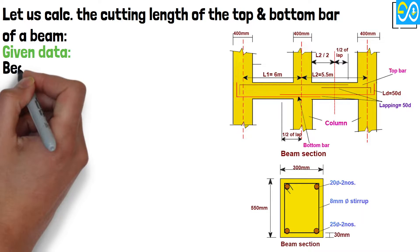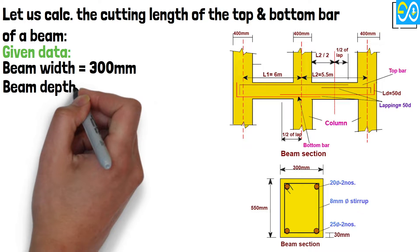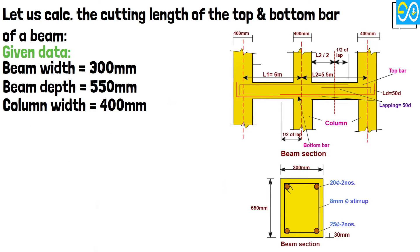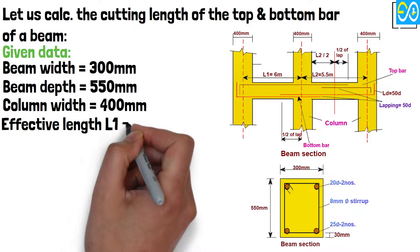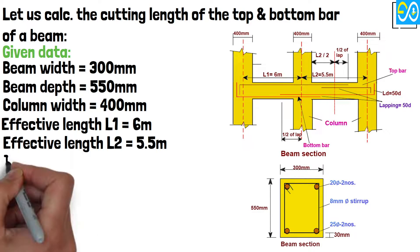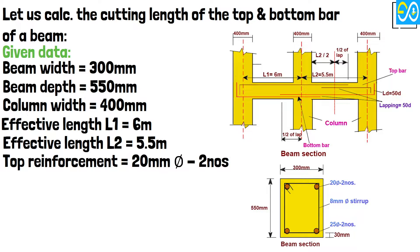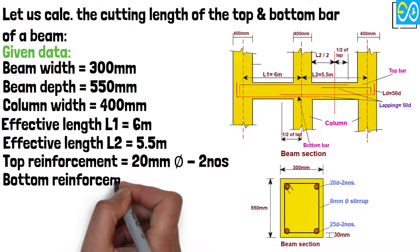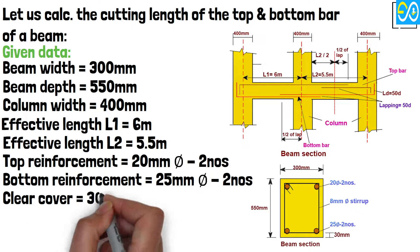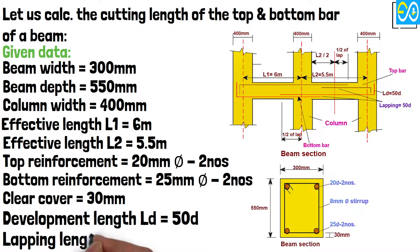Given data: Beam width equals 300 millimeters. Beam depth equals 550 millimeters. Column width equals 400 millimeters. Effective length L1 equals 6 meters. Effective length L2 equals 5.5 meters. Top reinforcement equals 20 millimeters diameter bar, 2 numbers. Bottom reinforcement equals 25 millimeters diameter bar, 2 numbers. Clear cover equals 30 millimeters. Development length Ld equals 50 diameter. Lapping length equals 50 diameter.